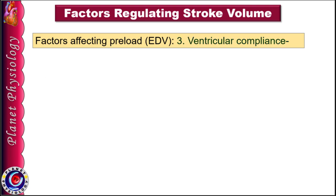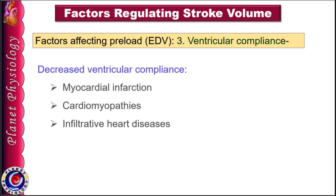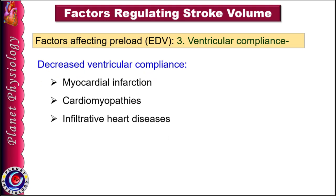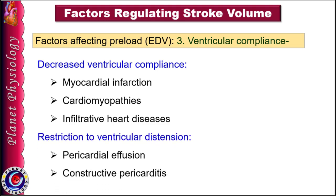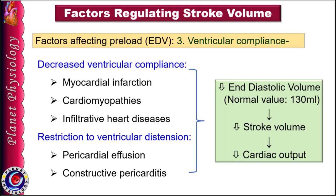The third factor affecting preload is ventricular compliance or stretchability. Myocardial infarction, cardiomyopathies, or infiltrative heart diseases reduce ventricular compliance and hence cardiac output. In case of pericardial effusion or pericarditis, even though ventricular muscles are normal, external pressure restricts their stretchability and decreases end-diastolic volume. Thus decrease in ventricular compliance reduces end-diastolic volume, leading to decrease in stroke volume and cardiac output.